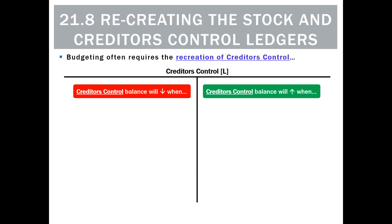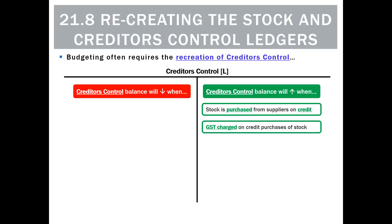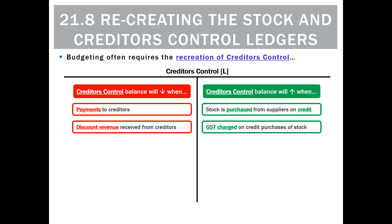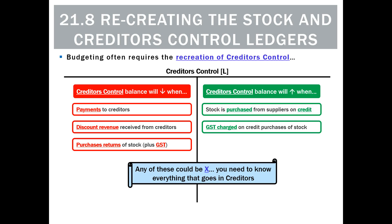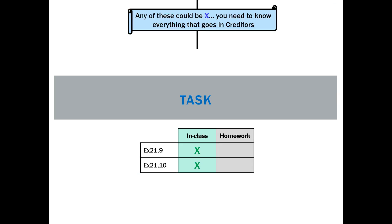It's very important that to do the budget we know everything that could go on creditors control. Creditors will go up when we buy stock from suppliers on credit and get charged GST. It'll go down when we make payments to creditors, when we receive a discount — discount revenue — and when we return purchases to them plus the GST. Any of these numbers could be X, and knowing each one means you'll always be able to recreate the creditors control ledger.